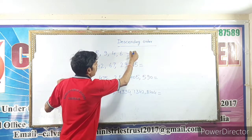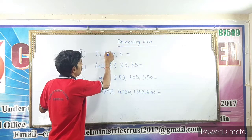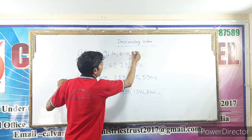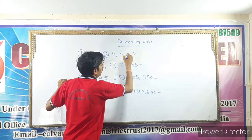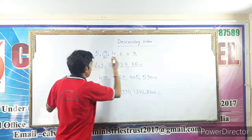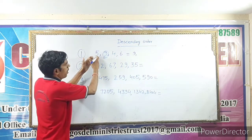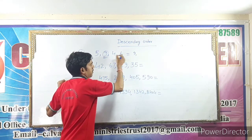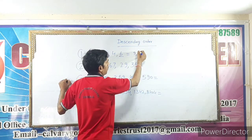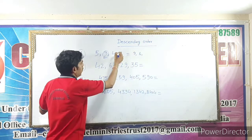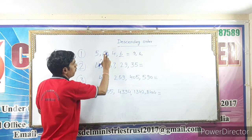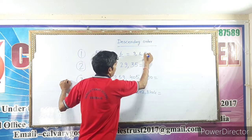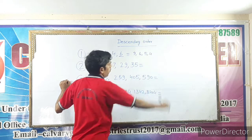The greatest number is 9, so we write 9 first. From the remaining numbers — 5, 4, 6 — the greatest is 6. Now from 5 and 4, the greatest is 5. And last, the smallest number is 4.